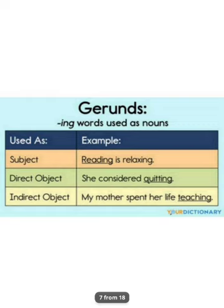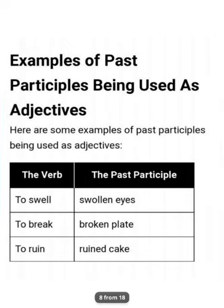'Reading is relaxing.' 'She considered quitting.' 'My mother spent her life teaching.' The main point is that the gerund acts as a noun form. Now let's move to the participle form. There are two types: present participle and past participle. Participles act as an adjective form — gerund is noun form, participle is adjective form.